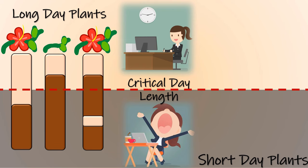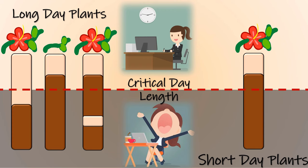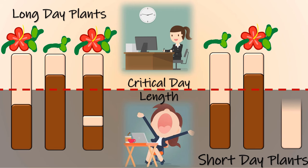Short day plants want to wrap up their work quickly and take a rest. So when the day is short and they have a big nighttime, they are very happy and they flower. But when the day is long and the night is short, they do not like it and they do not give flowers. Also, if their rest time is disturbed by light, they do not like it either, and no flowering happens.